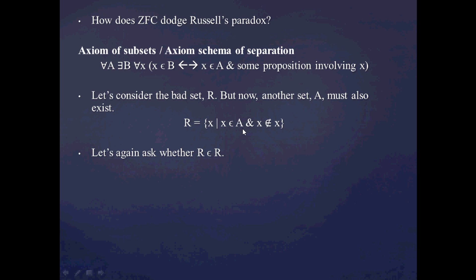So let's now consider that Russell question again. Let's ask whether R is a member of itself or not. And again, R is either a member of itself or it's not. So let's first assume that R is in the set R. Now since it's in the set R, both of these propositions have to be true. R has to be in the set A, that other set that was assumed to exist, and that R is not an R.